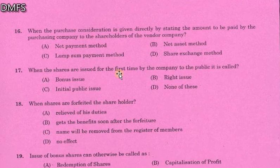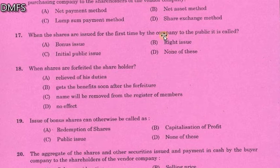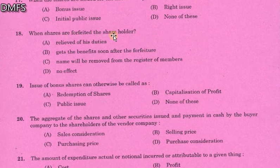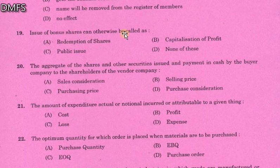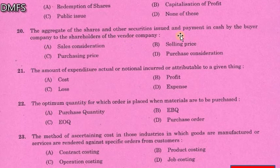When shares are issued for the first time by the company to the public, it is called the Initial Public Offer. When shares are forfeited, the shareholder's name will be removed from the register of members. The issue of bonus shares is called the capitalization of profit — option B. The agreement where shares and other securities are issued as payment in cash by the buyer company to the shareholders of a vendor company is purchase consideration — option D.